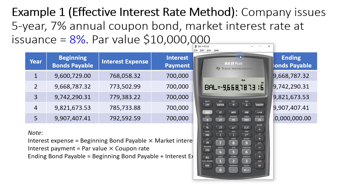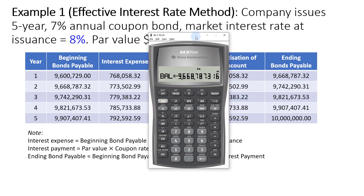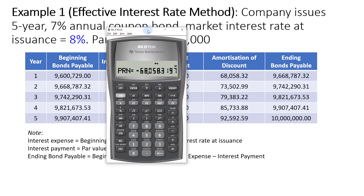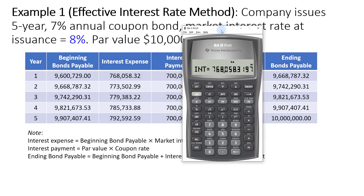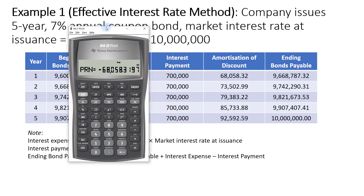Scroll down: the Balance shown will be the ending bonds payable of $9,668,787.32. Scroll down again: the Principal amount — in this case the discount — is $68,058. Scroll down once more: that will be the interest expense of $768,058.32. If you add the interest and the principal amount, you will arrive at the interest payment of $700,000, which is our PMT.